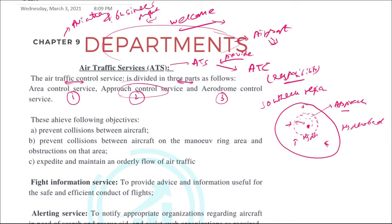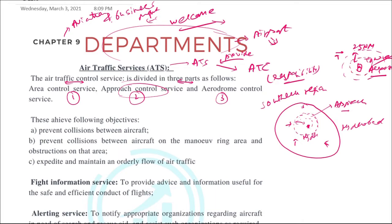The third is aerodrome control. Let's say the flight that wanted to land in Hyderabad is now just above or very near to the airport — within a distance of 25 nautical miles. It is just about to land or take off, and it is very close to the tower or aerodrome. When it is in this small region, the services provided by ATC come under the aerodrome control services.